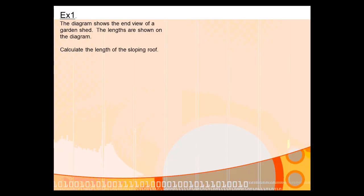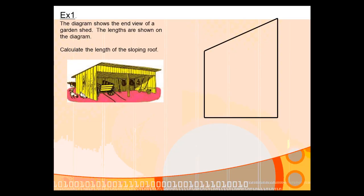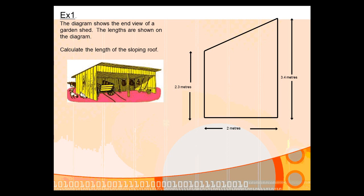Let's look at an example. The diagram on the screen shows the end view of a garden shed. In the diagram, you're given the base and the front height and the back height of the shed, and you're asked to find the length of the sloping roof, which is this sloping side here.